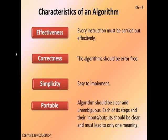Simplicity: the algorithm should be easy to implement. Unambiguous: the algorithm should be clear, and each of its steps and their inputs and outputs should be clear and must lead to only one meaning. For example, like function overloading — the same function name appears many times, but there is no problem because of the parameter list: the data type is different or the count is different. That is why we keep the algorithm clear and unambiguous.